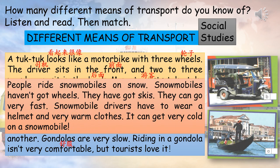Three. People ride snowmobiles on snow. Snowmobiles haven't got wheels. They have got skis. They can go very fast. Snowmobile drivers have to wear a helmet and very warm clothes. It can get very cold on a snowmobile.